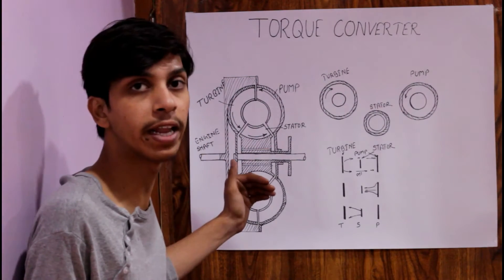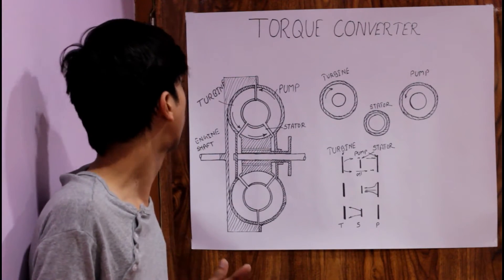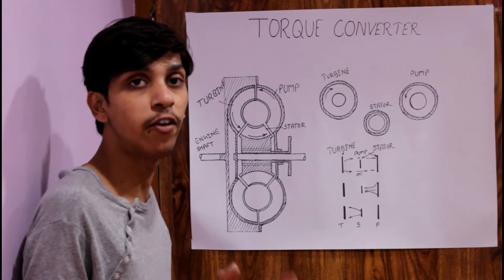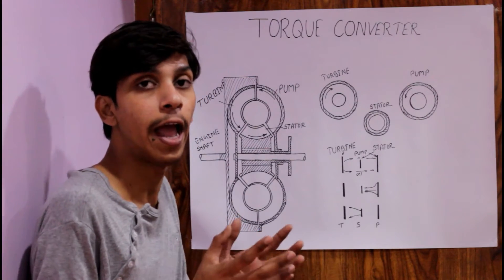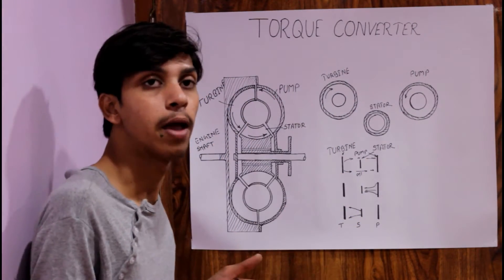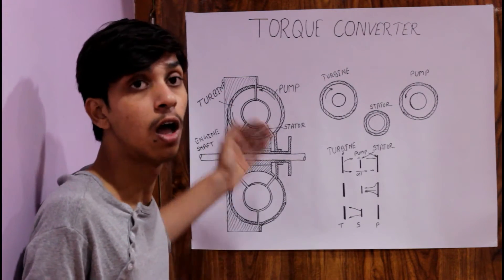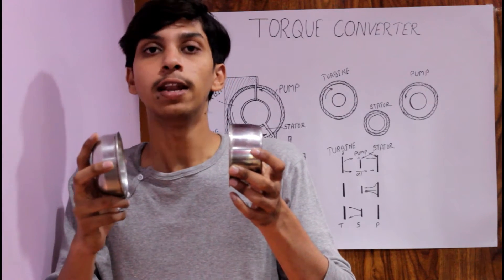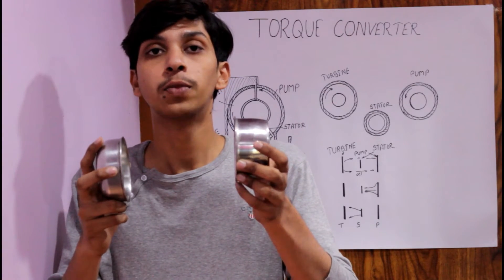When the engine starts spinning, the turbine also starts spinning at the same speed as the engine. When the turbine starts spinning, due to the centrifugal effect, the fluid present in the turbine also starts spinning, spreads out, and strikes the pump. The pump also starts spinning due to the high viscosity of the fluid.